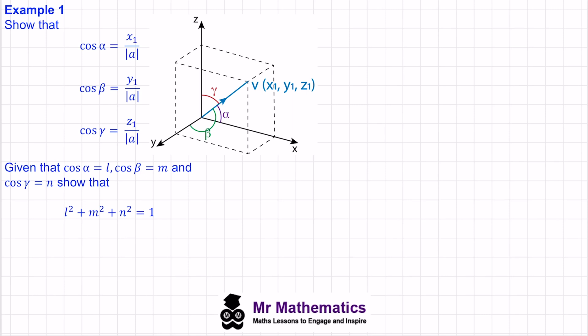Hello everybody. In this video we're going to look at the direction cosines of a 3D direction vector. We're going to start by proving the direction cosines cos alpha, cos beta and cos gamma, and then we're going to use these to prove the formula where L is cos alpha, M is cos beta and N is cos gamma.